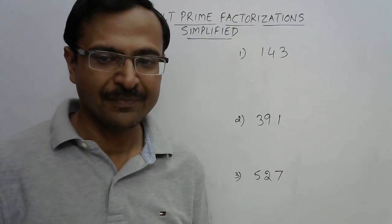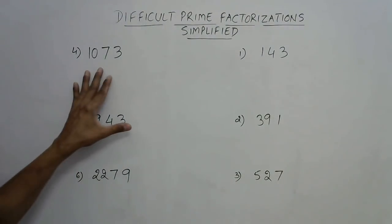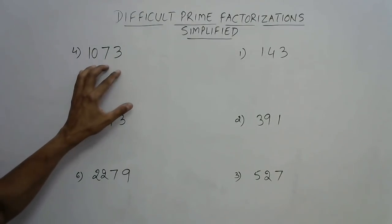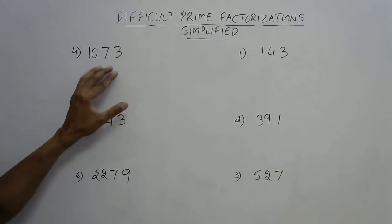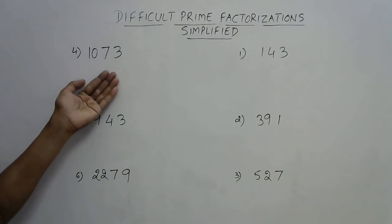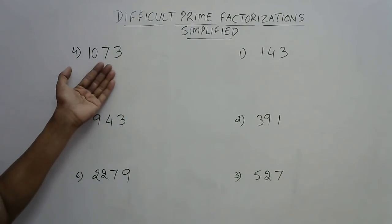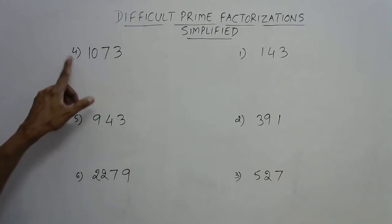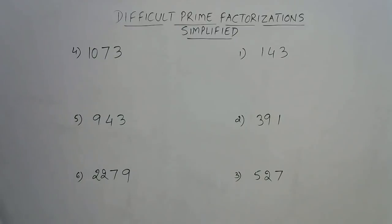But if the numbers involve prime factors which are greater than 11, then students feel difficulty in making the factors of such numbers. For example, the number 1073 is not divisible by 2, 3, 5, 7, or 11, so making the prime factors of 1073 is difficult.